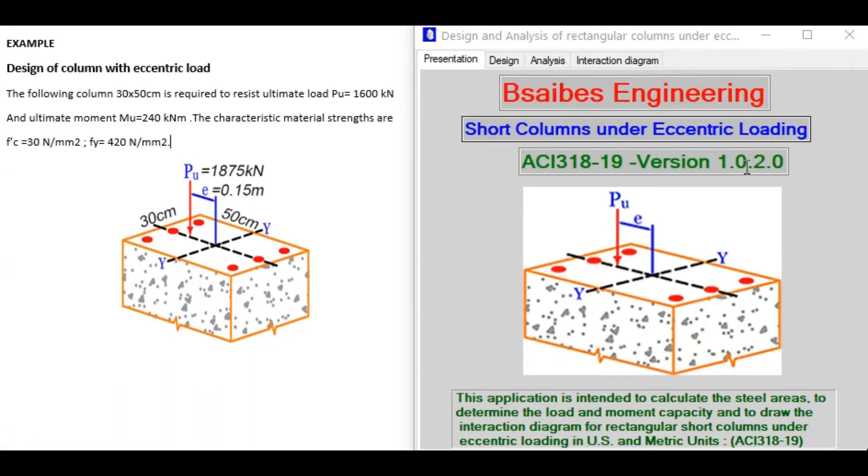and their eccentric loading, according to ACI code. This application is intended to calculate the steel areas to determine the load and moment capacity and to draw the interaction diagram for rectangular short columns and their eccentric loading in US and metric units. This example illustrates how this application works.